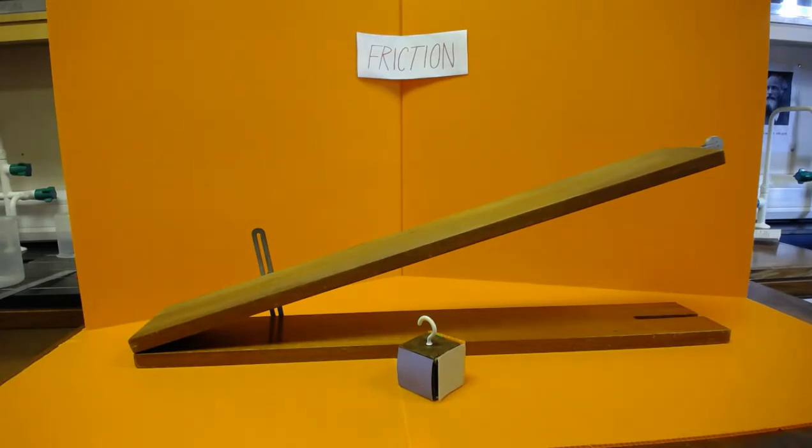Smoother materials will travel faster than rougher materials as on the surface of a smoother material there are less high points to bump and catch on the wooden ramp. Rougher surfaces will catch more and there will be more friction causing them to travel slower down the ramp.